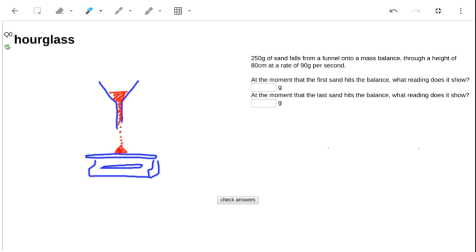Okay, this is a bit of a classic, this question here. We've got sand falling onto a mass balance. At the moment that the first sand hits the balance, what reading does it show?